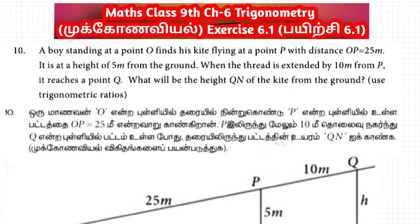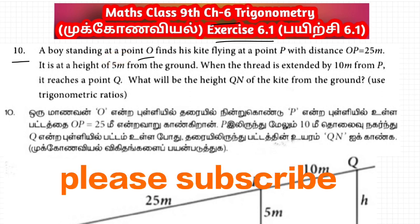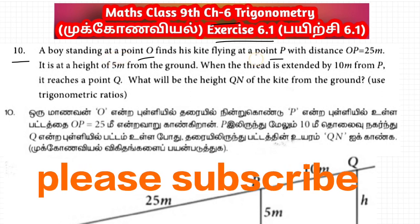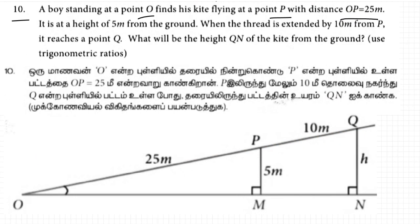Hi students, this is class 9 math chapter 6 trigonometry exercise 6.1 question number 10. A boy standing at a point O finds his kite flying at a point P with distance OP equal to 25 meters. A boy standing at point O, his kite is flying at point P, so this distance is 25 meters.